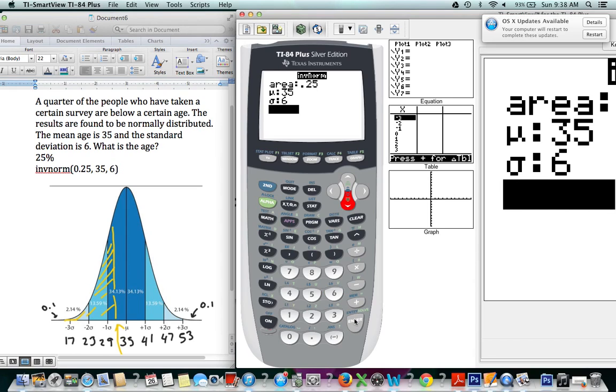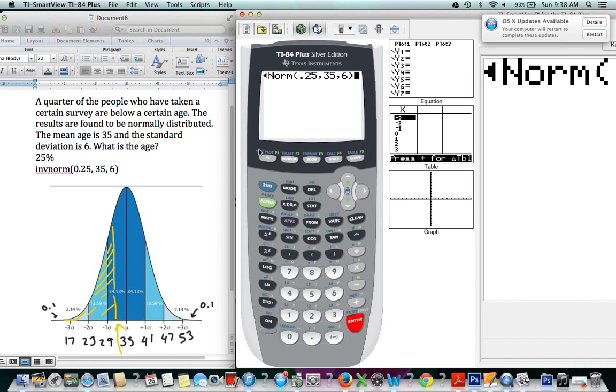Then we go down to paste. If you have the old calculator, just hold tight, we're going to go down to paste. And if you have the old calculator that is what you'll enter, invnorm, then you'd have to manually enter these values 0.25 comma 35 comma 6, close your parentheses. And everyone would press enter at this point.